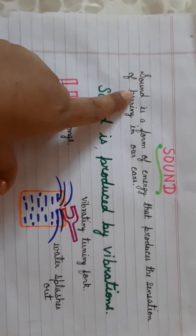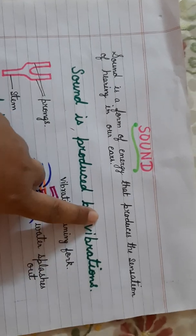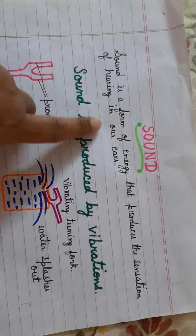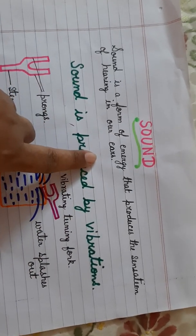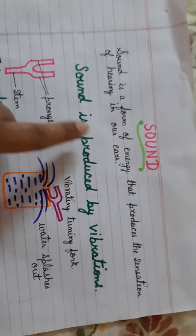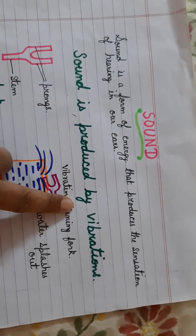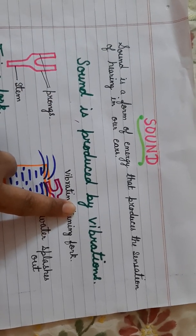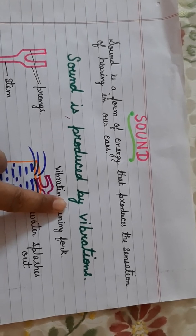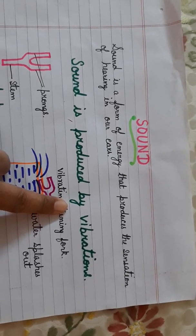We all know that sound is a form of energy that produces the sensation of hearing in our ears. Sound is produced as a result of vibrations. When any object produces sound, it is actually produced due to the vibrations in that particular object.